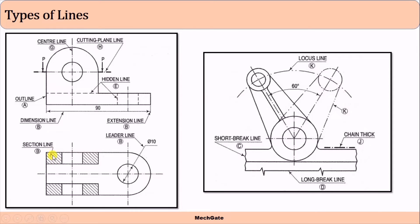This is called the section line, which is generally drawn at 45 degrees. It would always be between the visible lines — the inclined 45-degree line is the section line. We should draw the section line on the surfaces where the cutting plane line and the object are in contact.